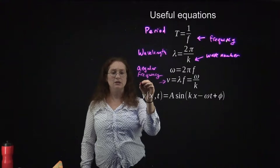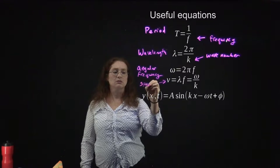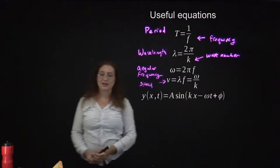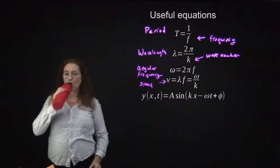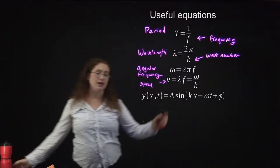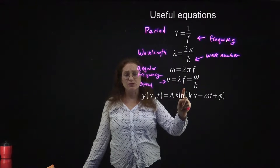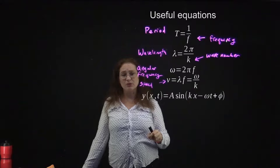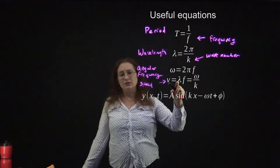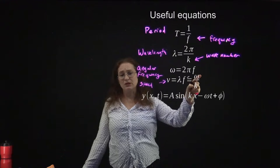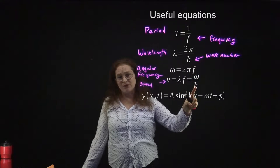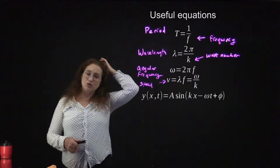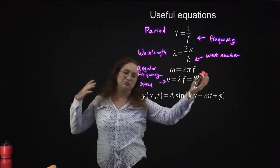V is the speed — not velocity, because we haven't said anything about the direction the wave travels. The speed is equal to the wavelength times the frequency, and using these equations you can rearrange to get that it is also equal to the angular frequency divided by the wave number. There are other permutations you can use to describe the speed — they're all different ways of describing the same quantities.